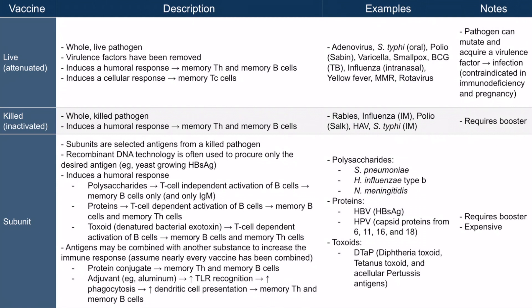Now let's discuss the last category: subunit vaccines. Subunits are selected antigens from a killed pathogen. Interestingly, recombinant DNA technology is often used to procure only the desired antigen — for example, giving yeast DNA to develop the appropriate hepatitis B surface antigen for the hepatitis B vaccine. These subunits will induce a humoral response and can take the form of polysaccharides, proteins, or toxoids.